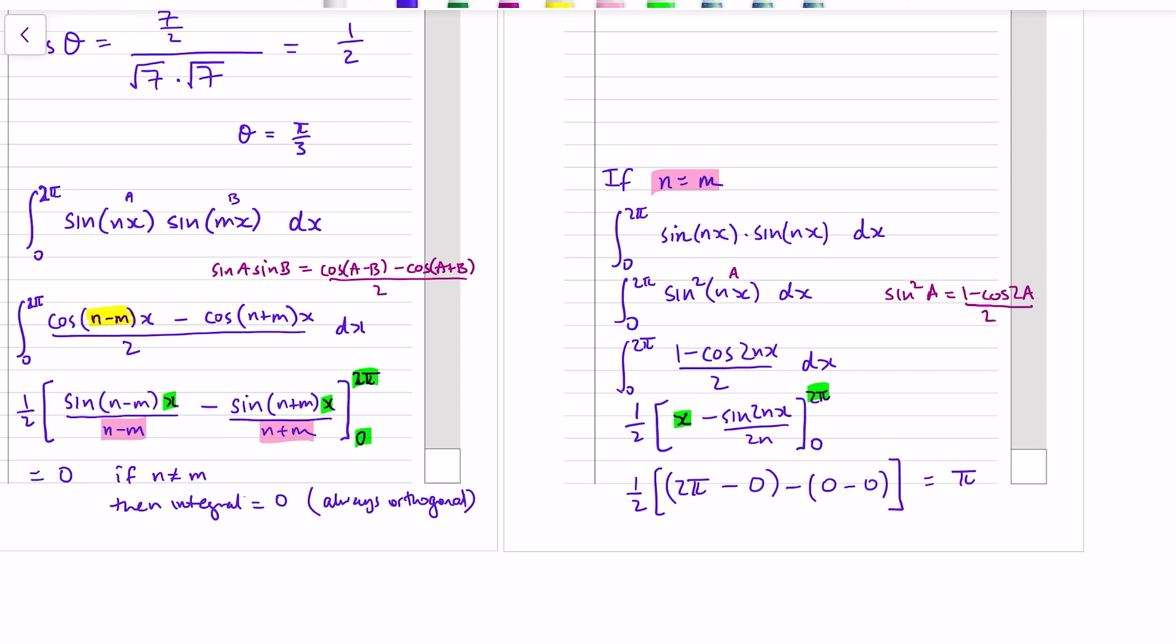Okay, remember that to be orthogonal we would have needed to solve this integral equal to 0. Well it's always equal to 0. On the right hand side though, for the special case if n is equal to m, then if we sub in 2 pi we don't get the same thing because we're subbing in 2 pi into here, into the x value. So we get a half, 2 pi minus 0, and then the other one is 0, so we get pi, which means that if n and m are the same then the functions are not orthogonal.